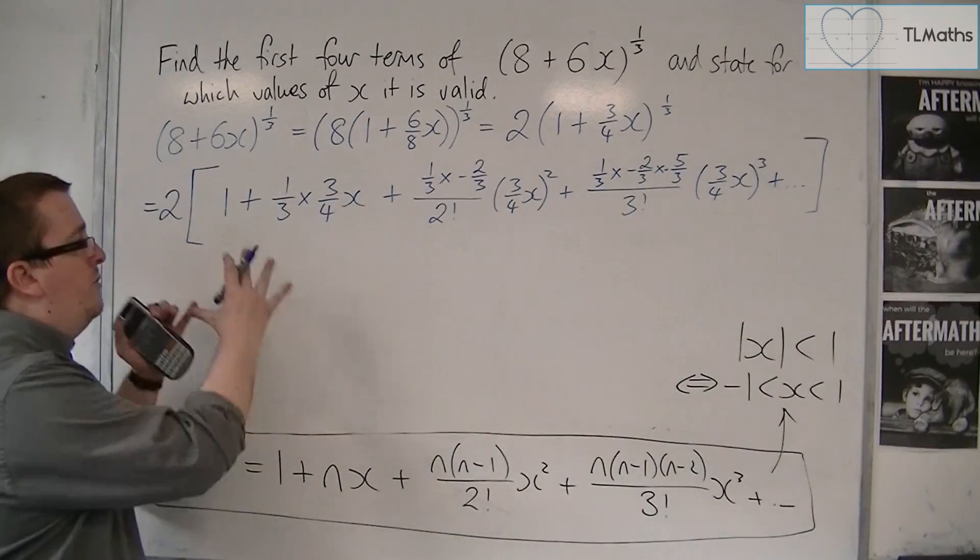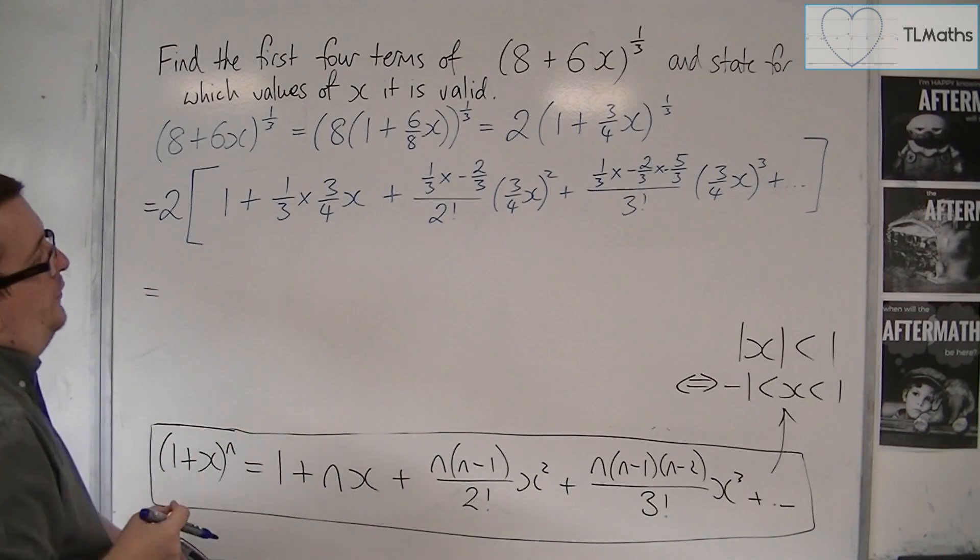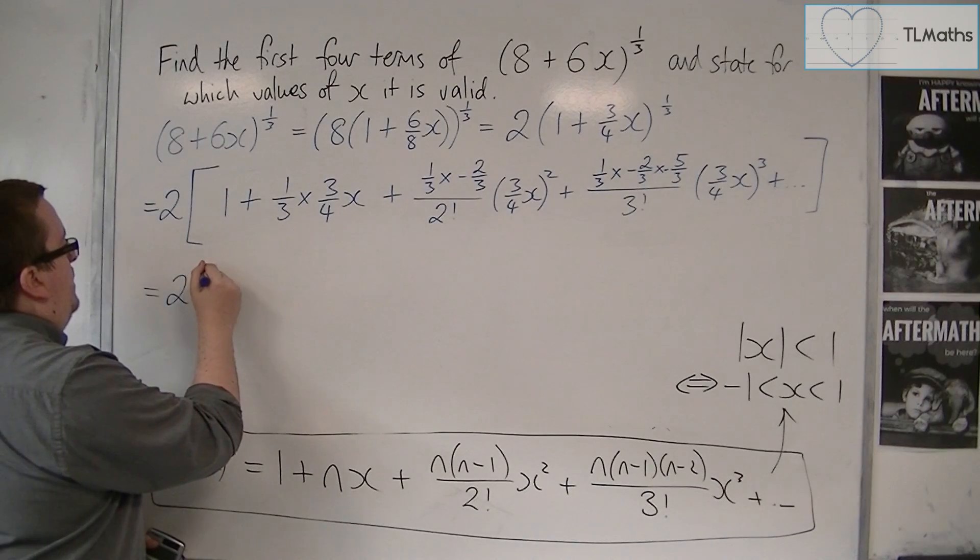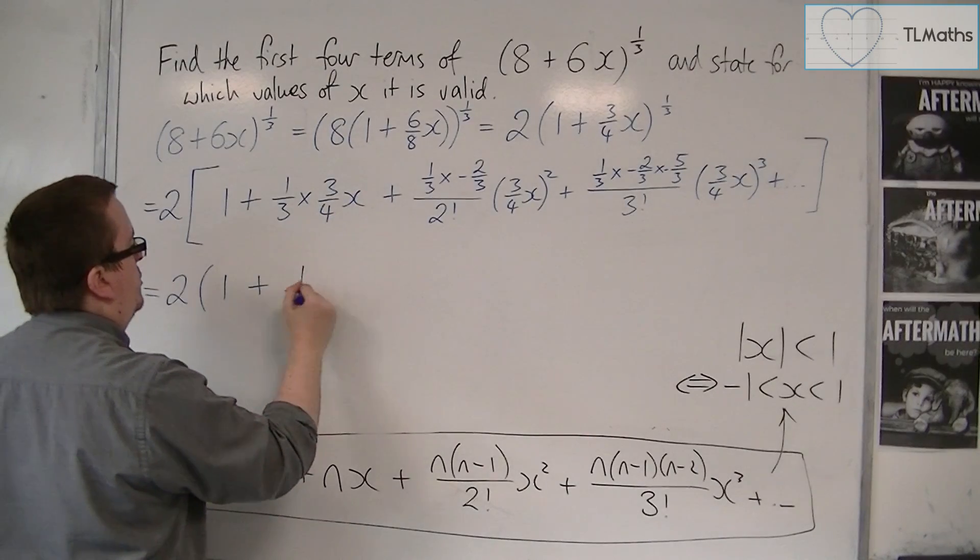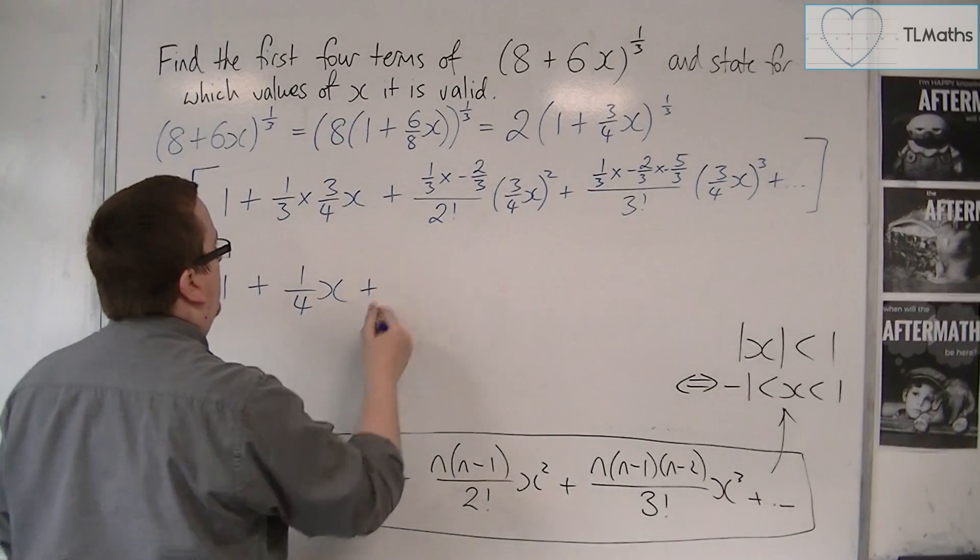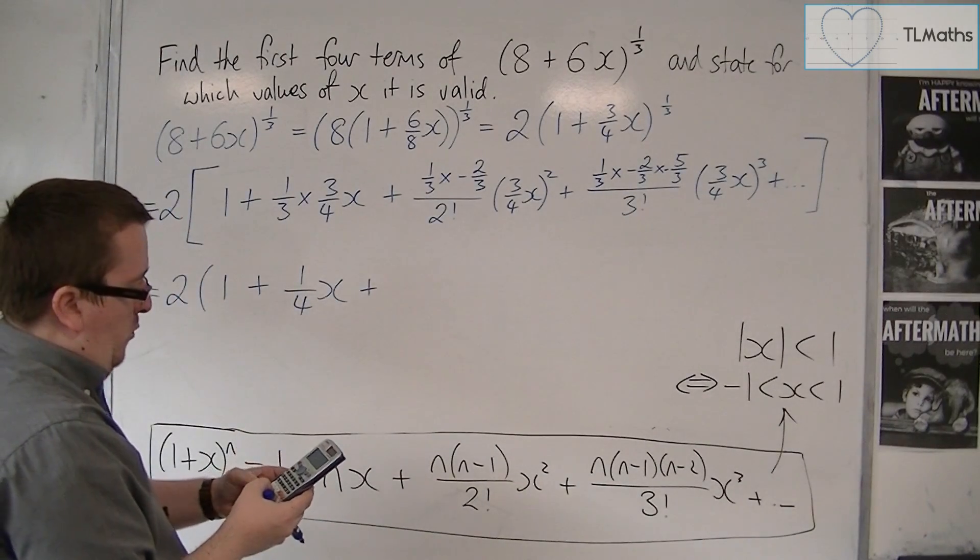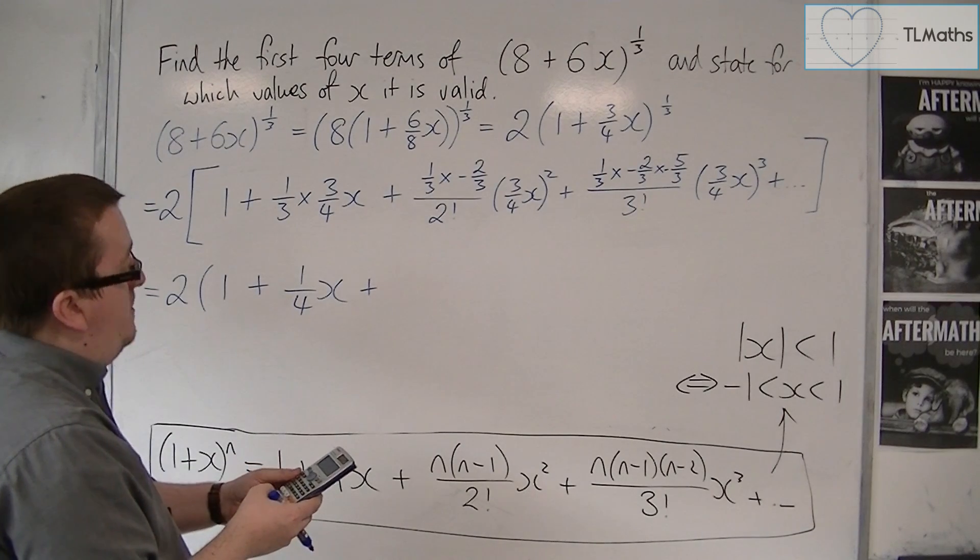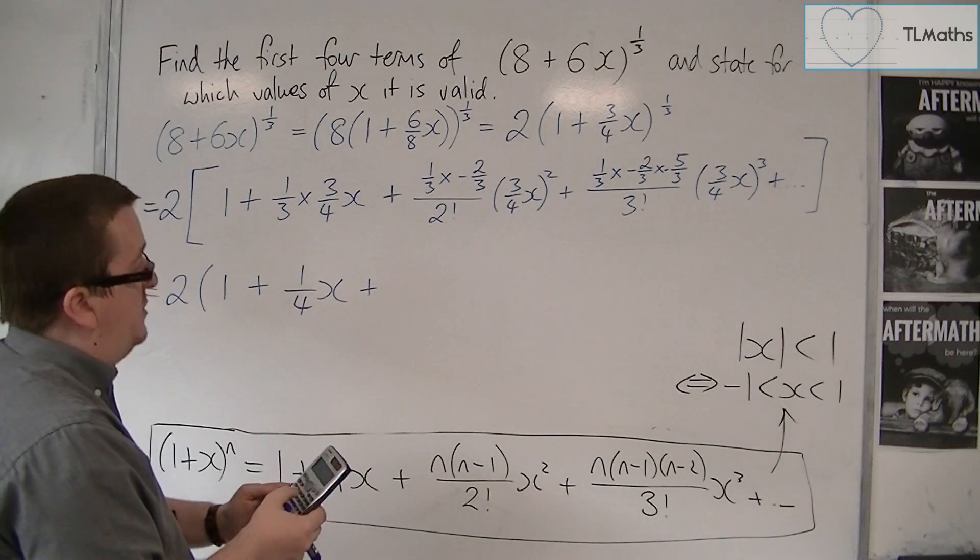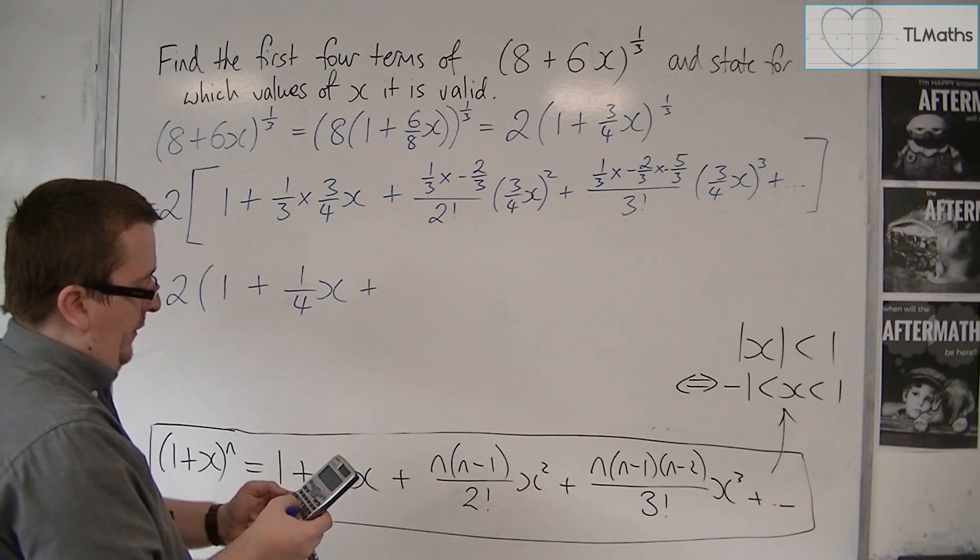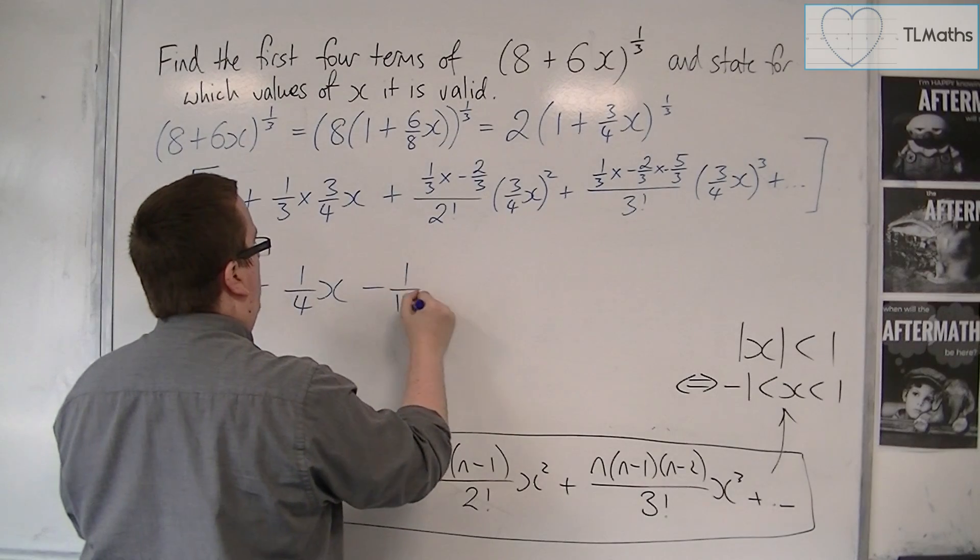Let's leave the 2 there for the moment, and then I'm going to have 1 + 1/3 times 3/4, which is just 1/4 x, plus. Now I'm going to have 1/3 times -2/3 divided by 2 factorial, so 1 times 2, times (3/4)^2, and that gets me -1/16 x^2.